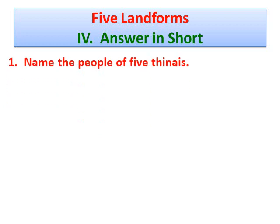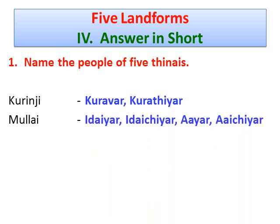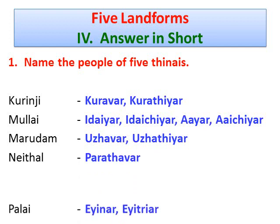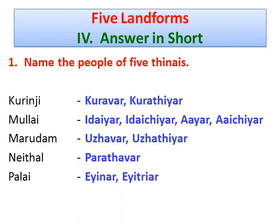Roman number four - Answer in short. Question number one: Name the people of the five Thinais. Answer: Kurinji - Koravar, Korathiyar; Mullai - Idayar, Idachiyar, Ayer, Aichiyar; Marudam - Ullavar, Ullatiyar; Nedaal - Paradavar (fishermen); Palai - Iyanar, Iyatriyar.